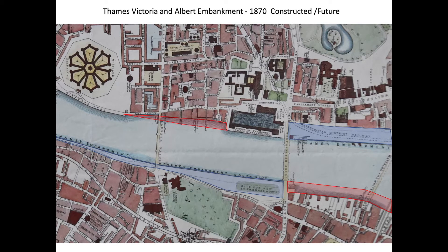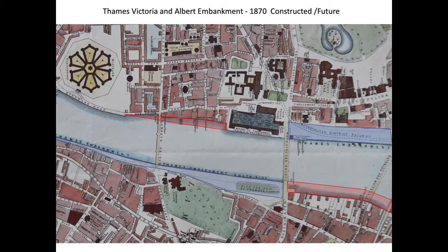This map shows where the embankment was laid — the ones in blue were the first phase, the ones in red were the second phase. You can also see where Tate Britain is, and Milbank Prison. You may know that the British are sometimes referred to as POMs in Australia, which some people say means 'prisoners of Milbank', as this was the main prison where they used to transport prisoners out to Australia.